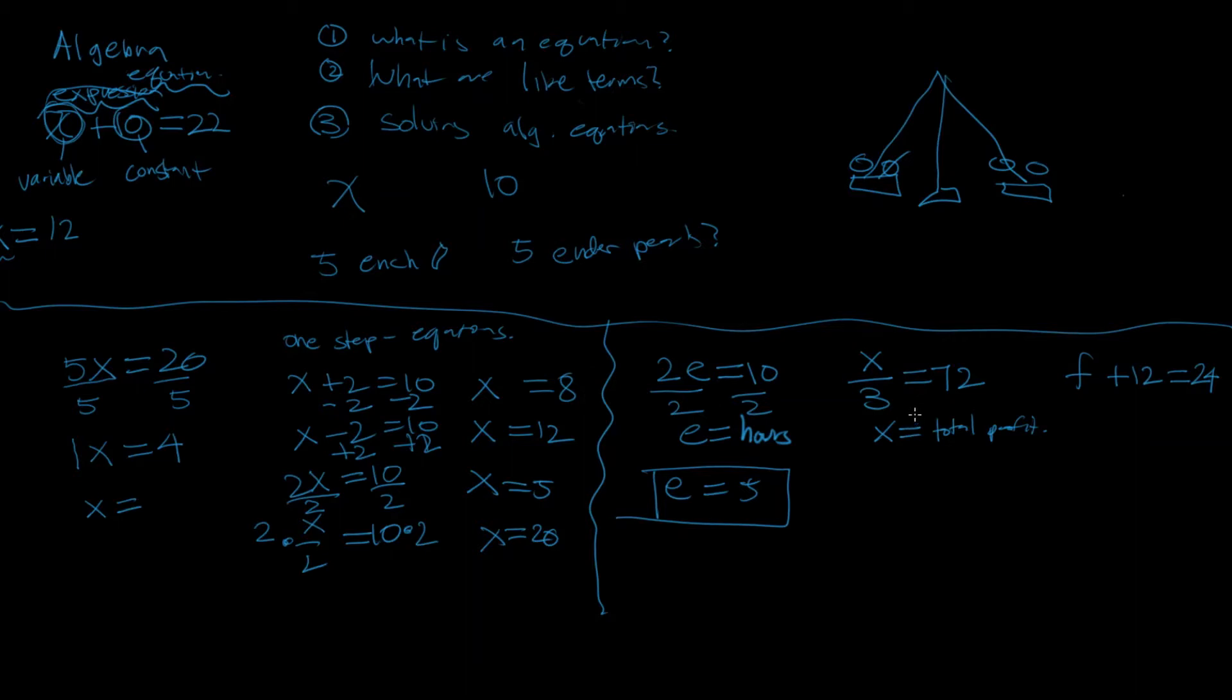X is a total profit that a co-op of 3 gets from, say, auction flipping. And each one of them wants to have 72 million coins. And let's just say, X is a total profit in millions then. And so, since they want 72 million each, what's the X value, the total profits that they've reaped? Pause the video here.